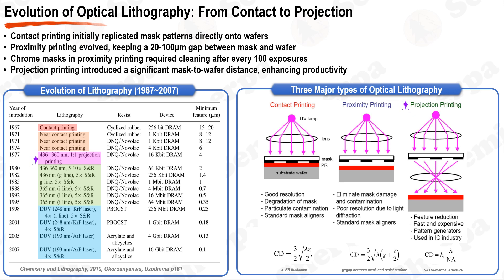The principle of contact printing was simple: replicate the mask pattern by placing it in direct contact with the wafer. While this eliminated the need for lenses and allowed expansive field sizes, achieving flawless contact was a formidable challenge. Even when contact was realized, it was undesirable for three reasons. First, flaws on the mask or wafer cause poor contact, leading to interference and uneven light patterns. Second, separating them without issues can be tricky, risking sticking or unclean separation. Third, direct contact risks physical damage from trapped particles, pressure, or separation itself, accumulating over time.